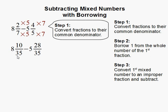We do this by multiplying 5 to 2 and 7 to get 10 over 35, and 7 to both 4 and 5 to get 28 over 35. Now we have a common denominator. We can then subtract.